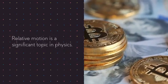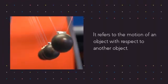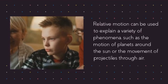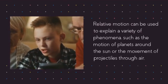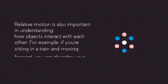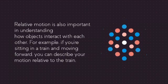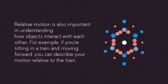Relative motion is a significant topic in physics. It refers to the motion of an object with respect to another object. Relative motion can be used to explain a variety of phenomena, such as the motion of planets around the sun or the movement of projectiles through air. Relative motion is also important in understanding how objects interact with each other. For example, if you're sitting in a train and moving forward, you can describe your motion relative to the train.